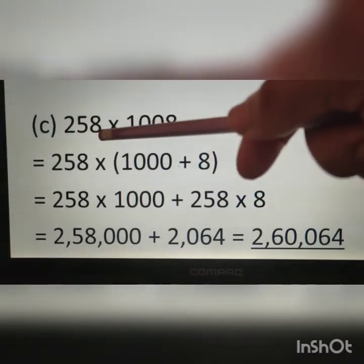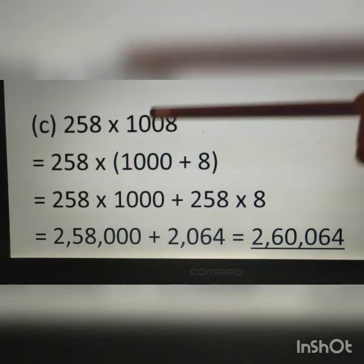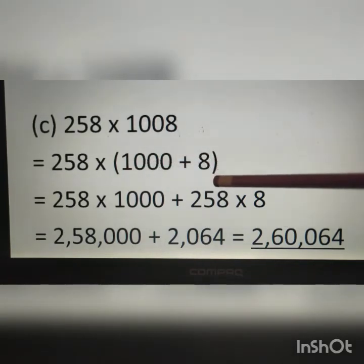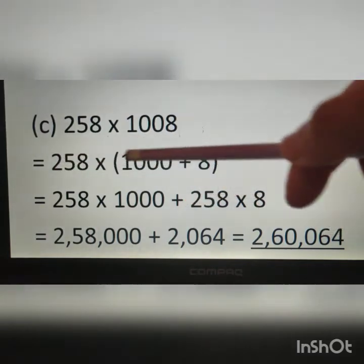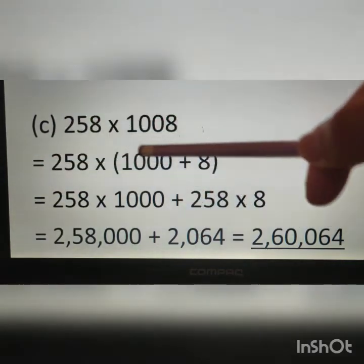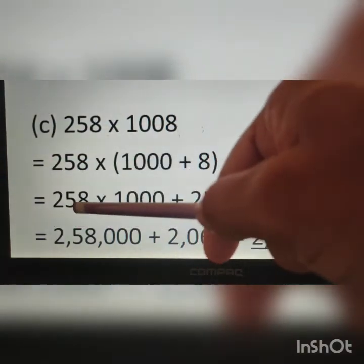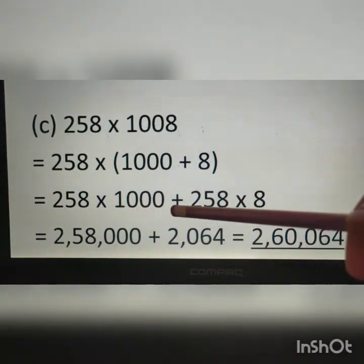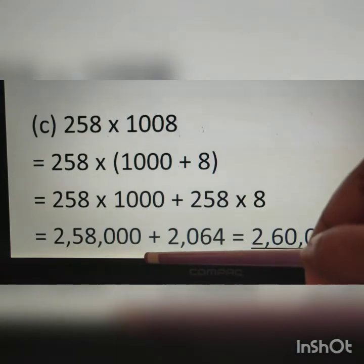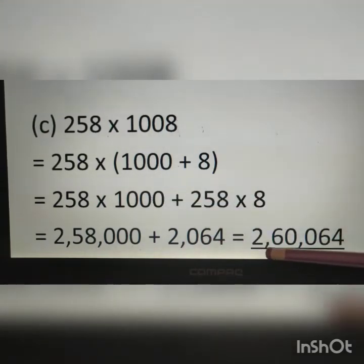Question C: 258 multiplied by 1008. We write 1008 as 1000 plus 8. Since 258 is common to 1008, by the distributive property we write 258 multiplied by 1000 plus 258 multiplied by 8. Therefore, 2,58,000 plus 2,064 gives the final answer of 2,60,064.